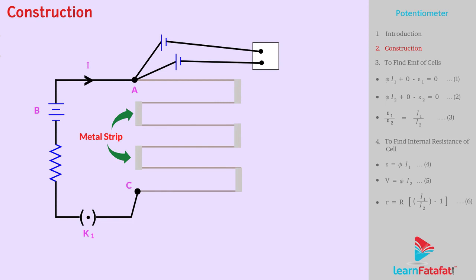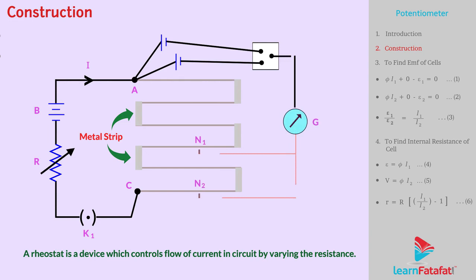Current flowing through the wire is varied by using rheostat R. A rheostat is a device which controls flow of current in circuit by varying the resistance. A galvanometer is connected with a sliding jockey and a cell. Let us now understand use of potentiometer to find EMF of cells.